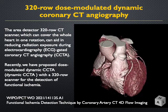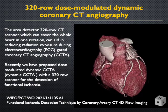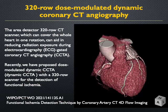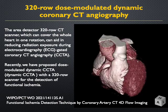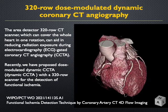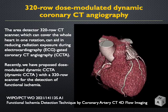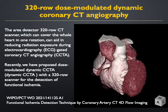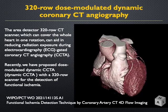A wide-area detector, which can cover the whole heart in one rotation, can aid in reducing radiation exposure during ECG-gated coronary CT angiography.